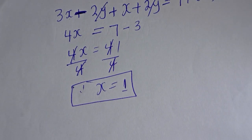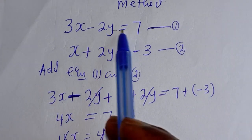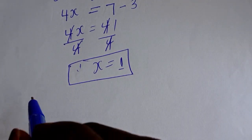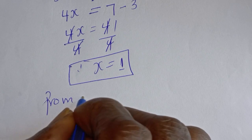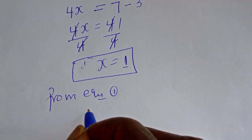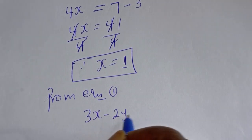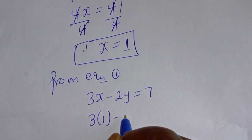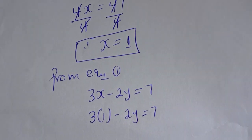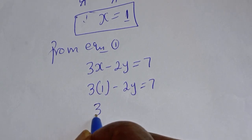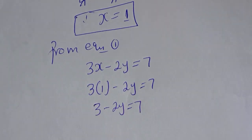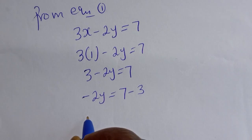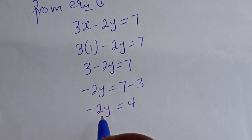We've gotten the value of x. Let's substitute for x in equation 1 to get the value of y. From equation 1: 3x minus 2y is equal to 7. When x is 1: 3 bracket 1 minus 2y is equal to 7. So 3 minus 2y is equal to 7. Then minus 2y is equal to 7 minus 3, giving minus 2y is equal to 4.